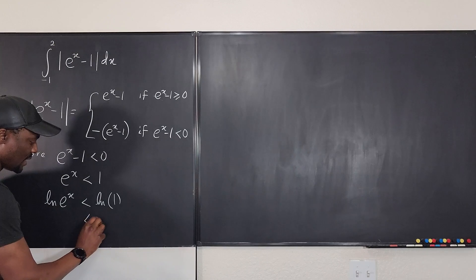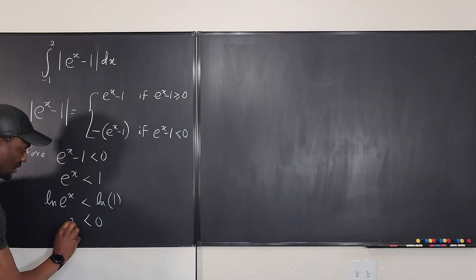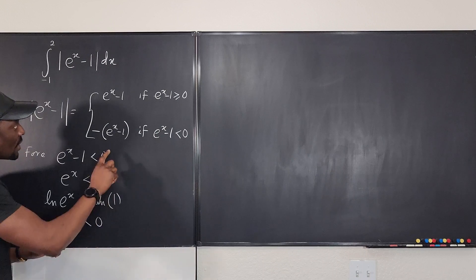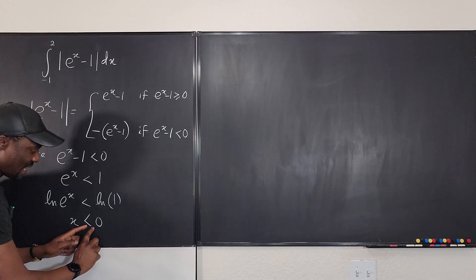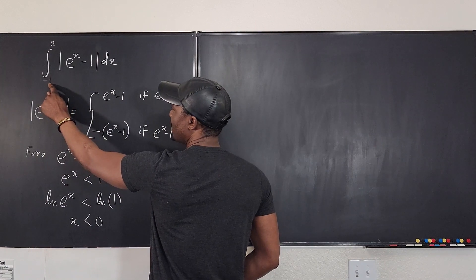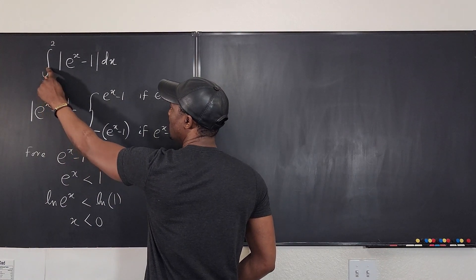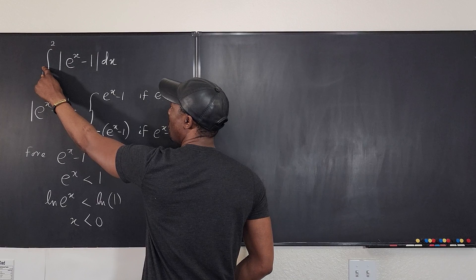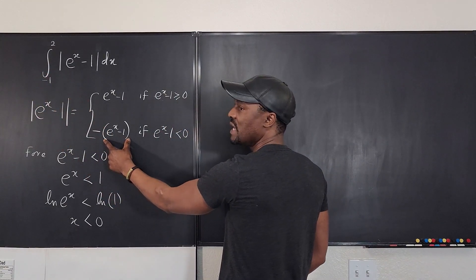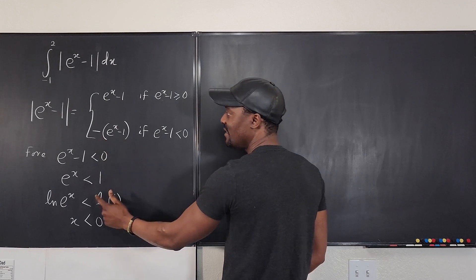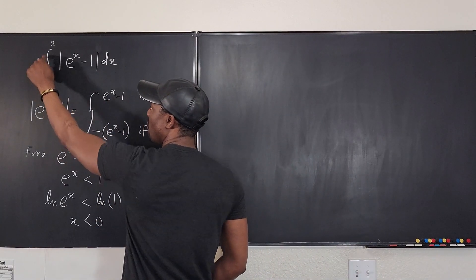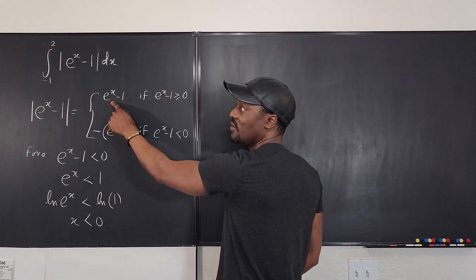Well, we know that natural log of one is zero, and this is going to give us just x. So you're looking for all values, all intervals where x is less than zero. So you can tell that this is less than zero — you keep going up until you get to zero. And for that interval, this is the expression you will be integrating. Anything above that satisfies the second condition, so you go from zero to this part.